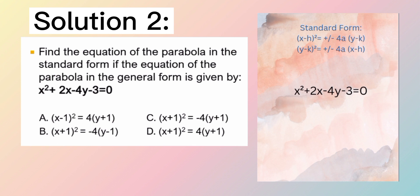We have the general form and we also have the standard form. Ano-ano yung standard form ng parabola? As you can see, we have 2. x minus h squared is equal to plus or minus 4a times y minus k. And the other one, y minus k squared is equal to plus or minus 4a times the quantity of x minus h. Kailan yung number 1, kailan yung number 2, at kailan yung positive, at kailan yung negative.